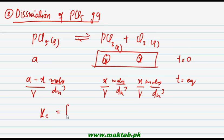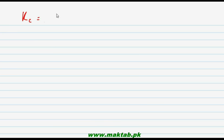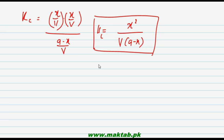The Kc expression for PCl5 dissociation is: Kc = [PCl3][Cl2] / [PCl5] = (x/V)(x/V) / ((a−x)/V). The one V in the numerator cancels with one V in the denominator, x×x becomes x², and the remaining V stays in the denominator. So Kc = x² / V(a−x). This is the Kc expression for the dissociation of PCl5.